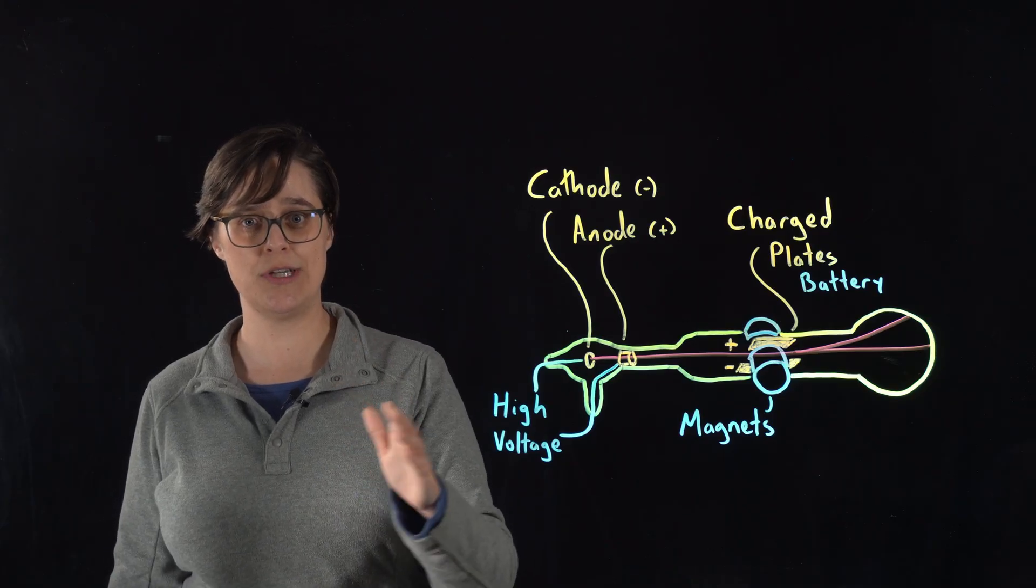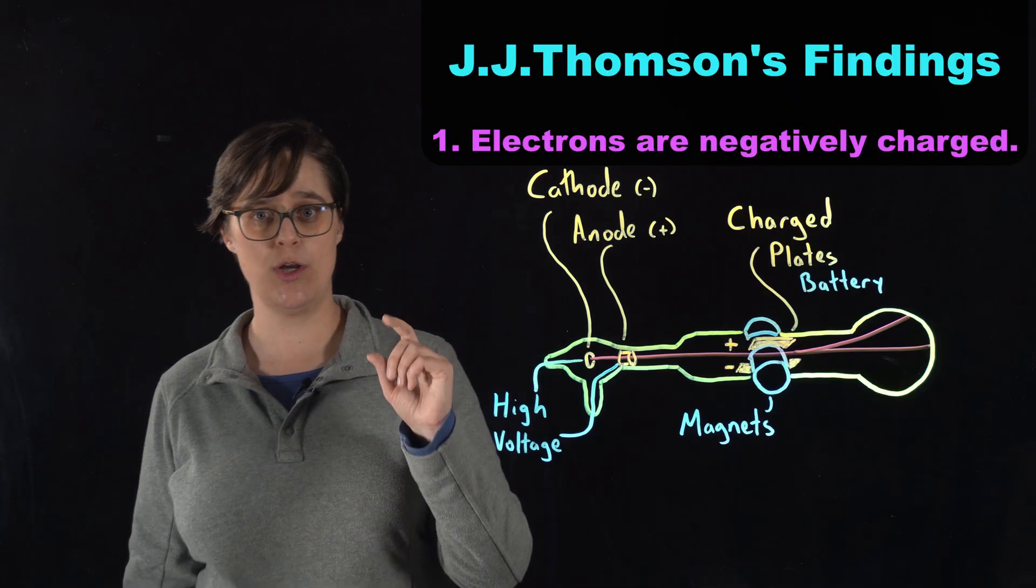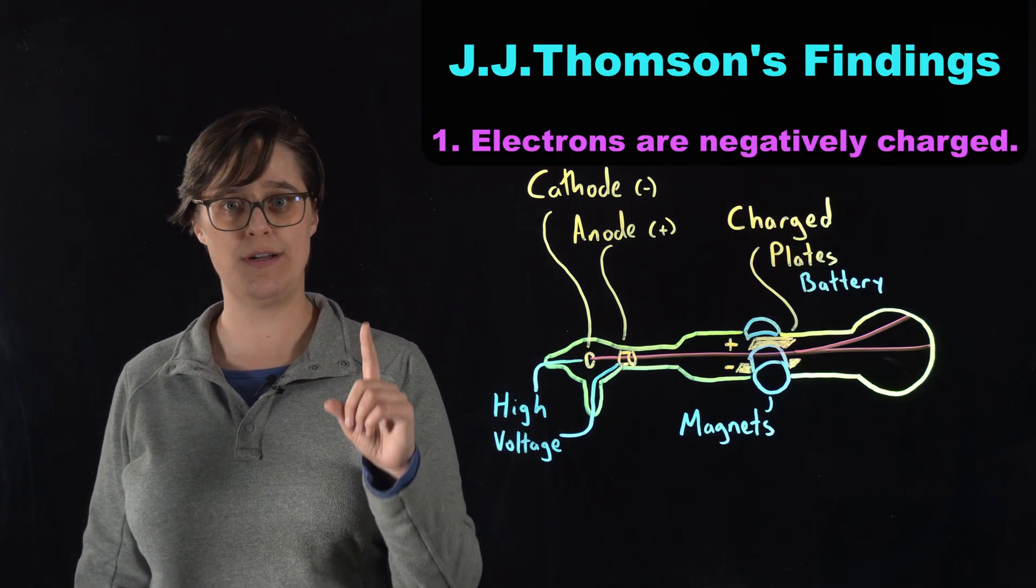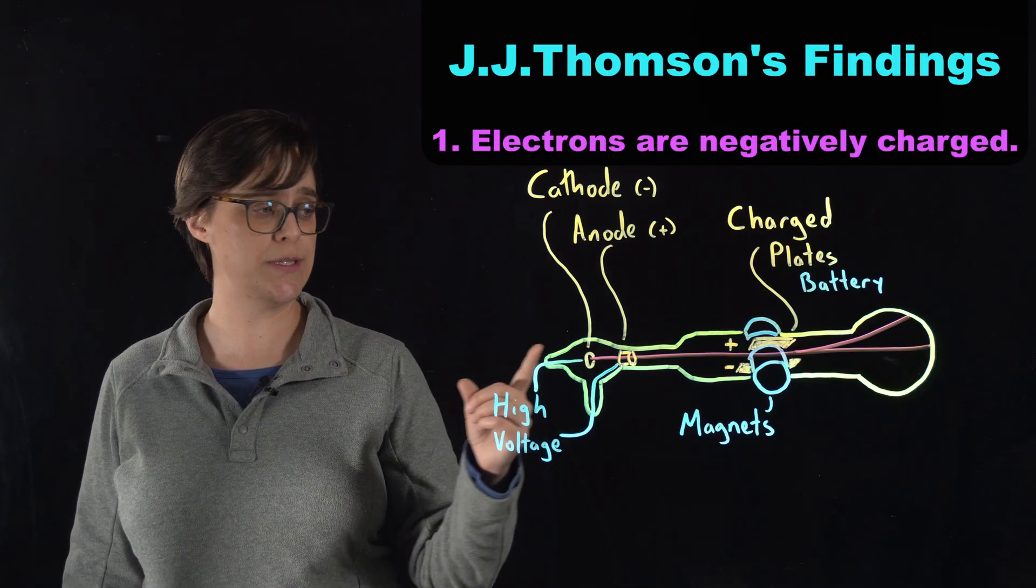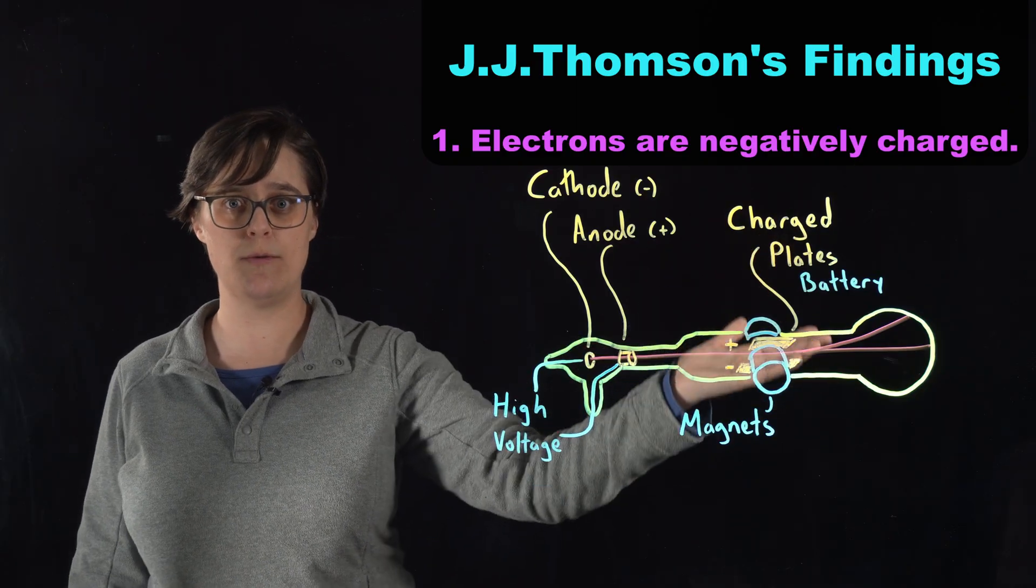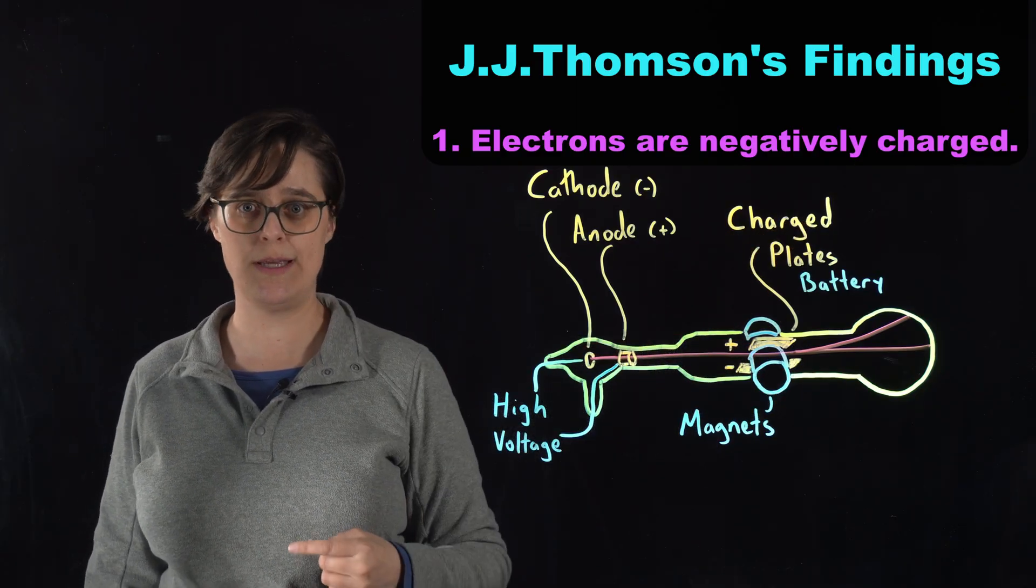In a nutshell, here are JJ Thompson's findings. Number one, electrons are negatively charged because opposite charges attract and the ray was deflected towards the positive plate.